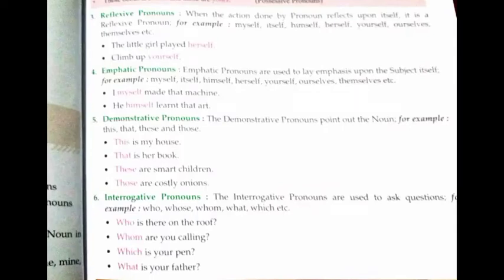Now we see reflexive pronoun. When the action done by a pronoun reflects upon itself — मतलब अगर pronoun कोई action कर रहा है और उसका reflection उसी पर आता है — तो उसे हम reflexive pronoun बोलते हैं। Examples: myself, itself, himself, herself, yourself, ourselves, themselves.